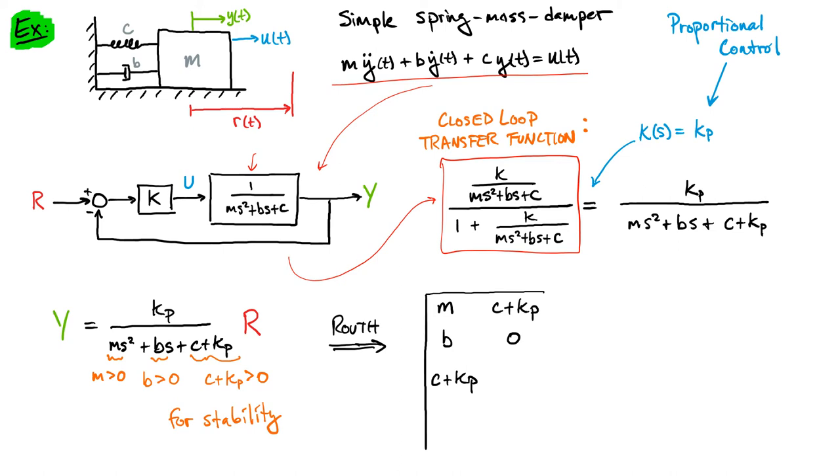Our controller in this case is just going to be the constant Kp, motivated by the idea of proportional control - our simplest version of control. So if we plug that in, this becomes Kp. We multiply top and bottom by that ms² + bs + c, and that leads us to this closed-loop transfer function with proportional control.